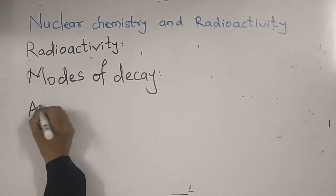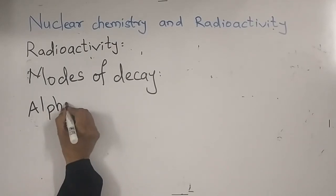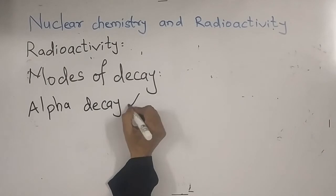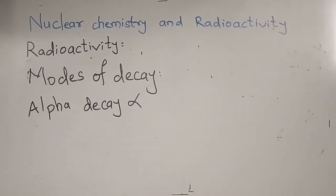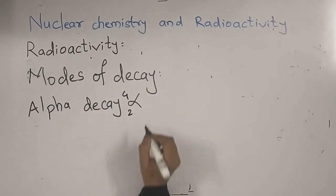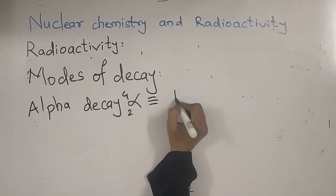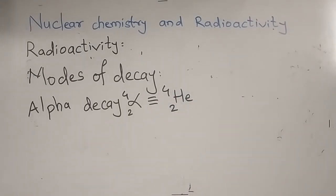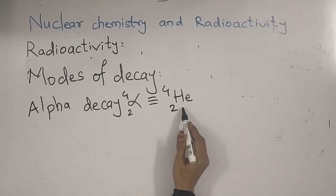First is alpha decay. An alpha particle is represented as ₂⁴He. One alpha particle is equivalent to one helium nucleus, with atomic number 2 and mass number 4. It is a heavy particle with a charge of +2.